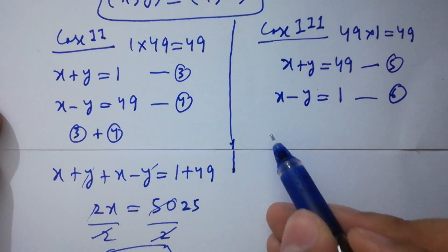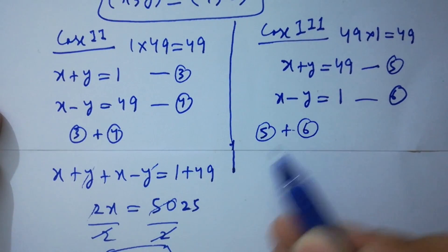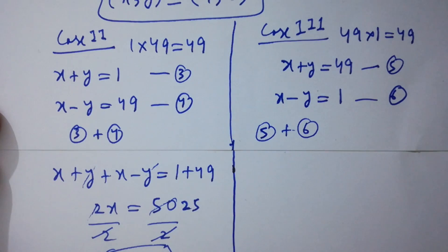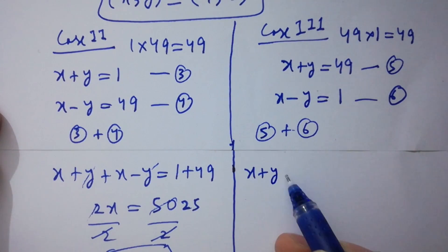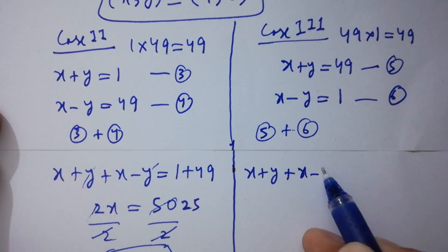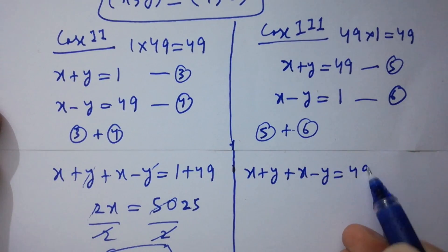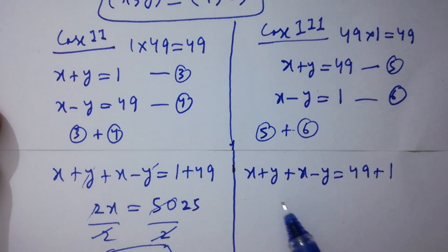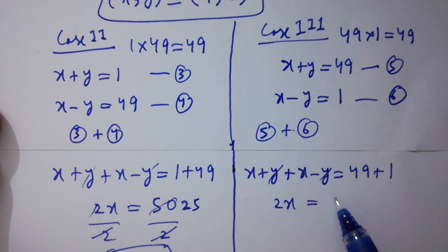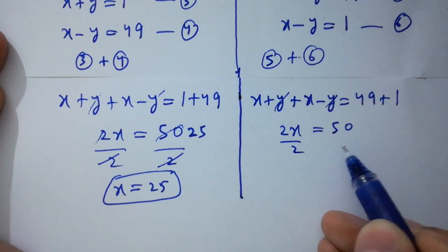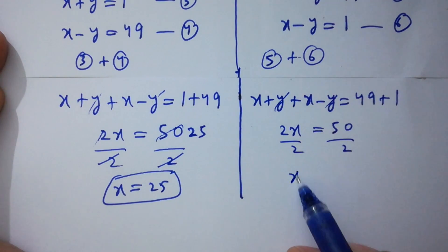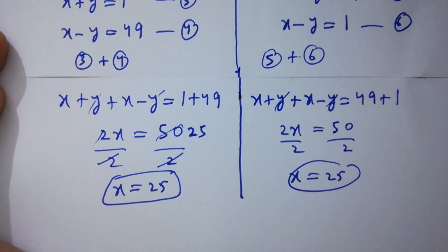Similarly, adding the fifth and sixth equations: x plus y plus x minus y equals 49 plus 1. The y terms cancel, giving 2x equal to 50. Dividing by 2 on both sides, we get x equal to 25.